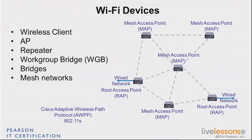Cisco networks today in mesh use AWPP. The industry may start to adopt 802.11s widely, perhaps through Wi-Fi Alliance certification. When that day comes, maybe Cisco will change from AWPP to 802.11s, but until then in a Cisco network, AWPP is the protocol you find in mesh networks.